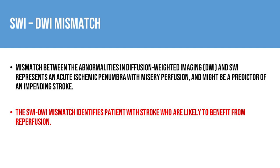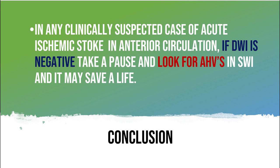This mismatch might be a predictor of impending stroke. Susceptibility-diffusion mismatch identifies patients with stroke who are likely to benefit from reperfusion. In conclusion, in any clinically suspected case of acute ischemic stroke in the anterior circulation, if diffusion is negative, take a pause and look for asymmetric hypointense veins in susceptibility weighted imaging — it may save a life. Thank you very much; hope this video was useful for you.